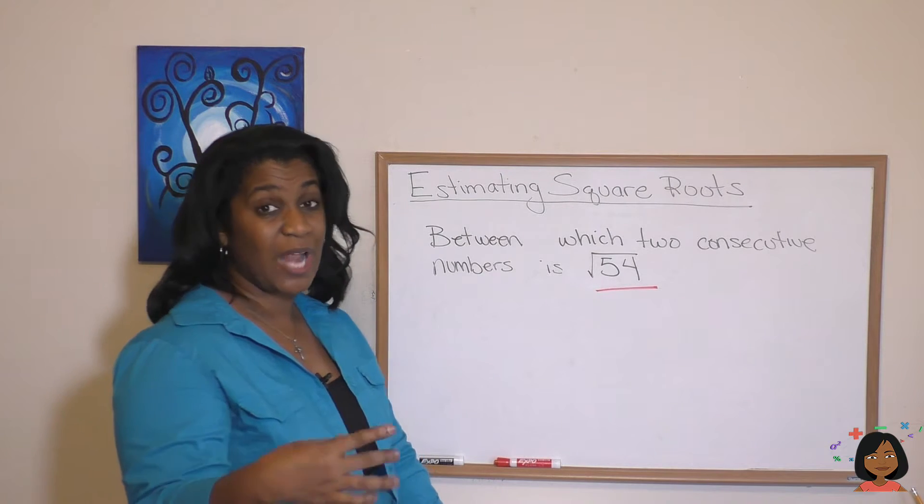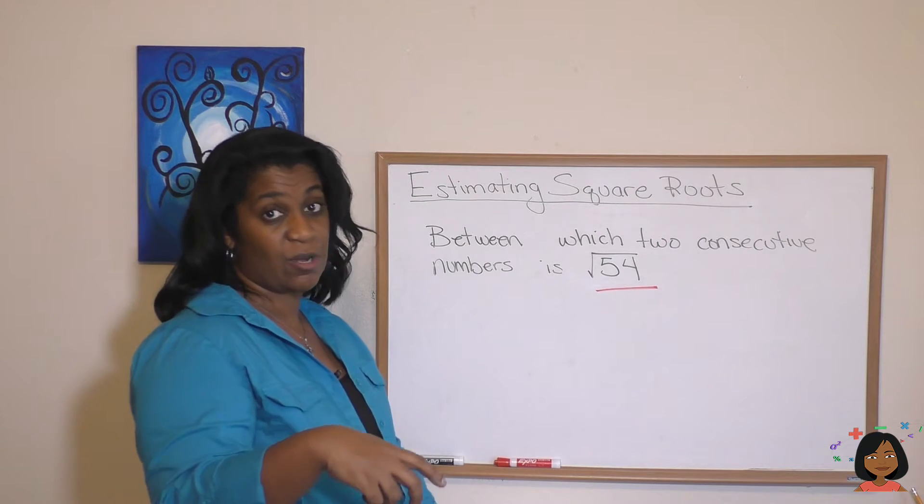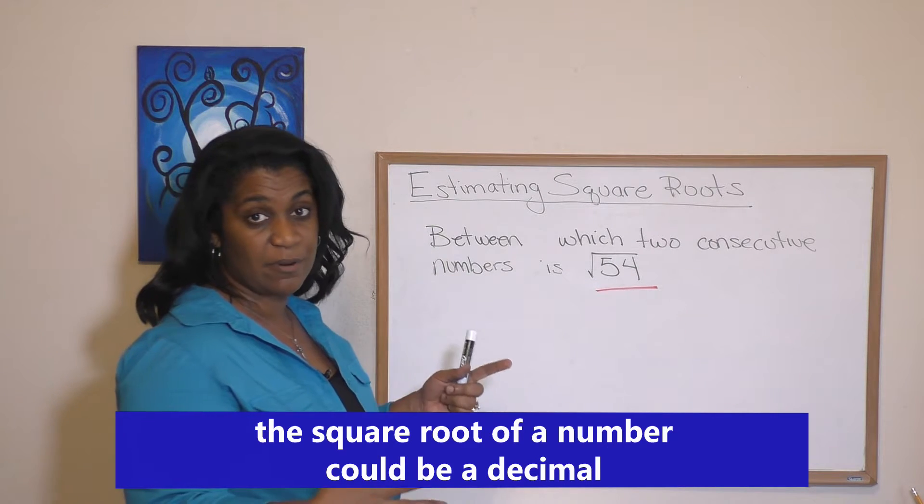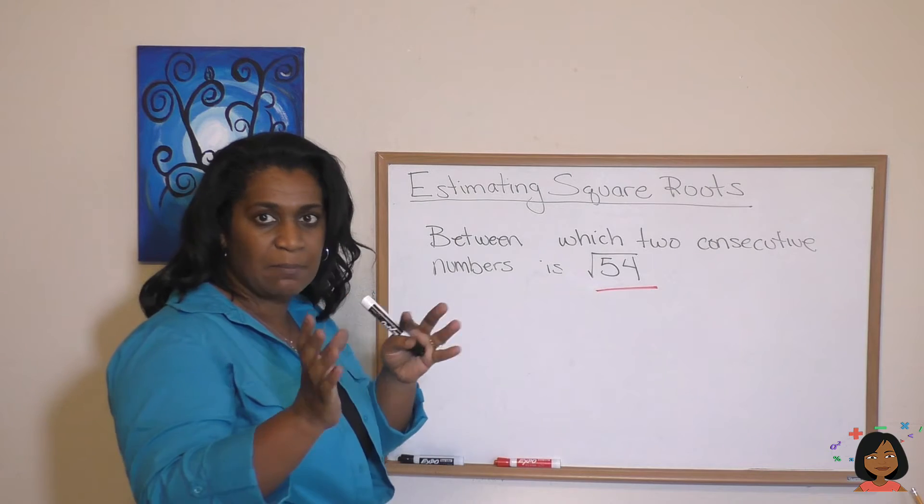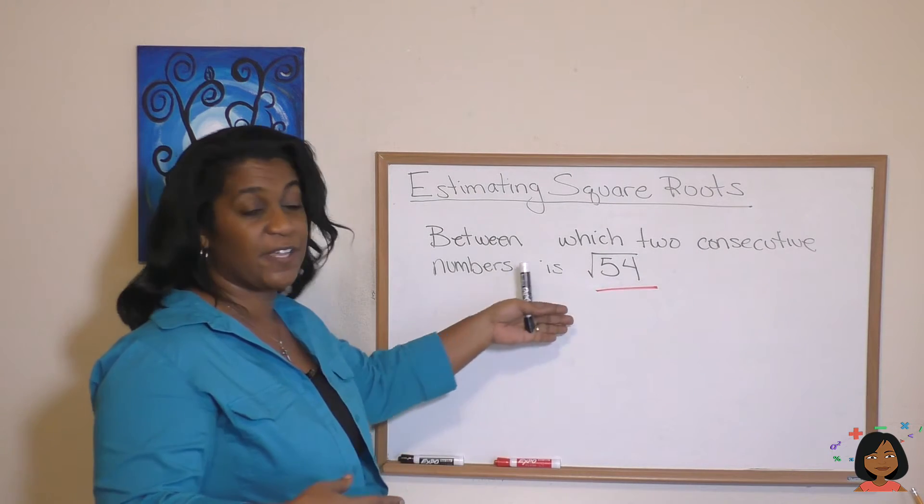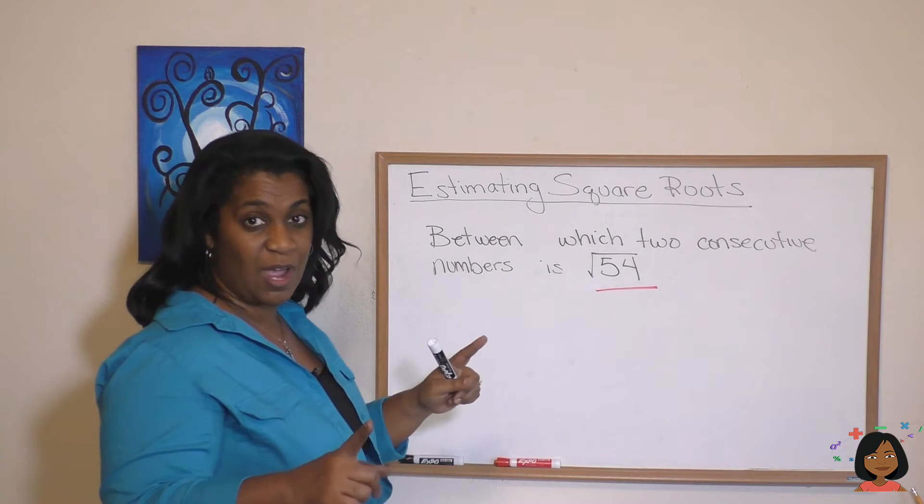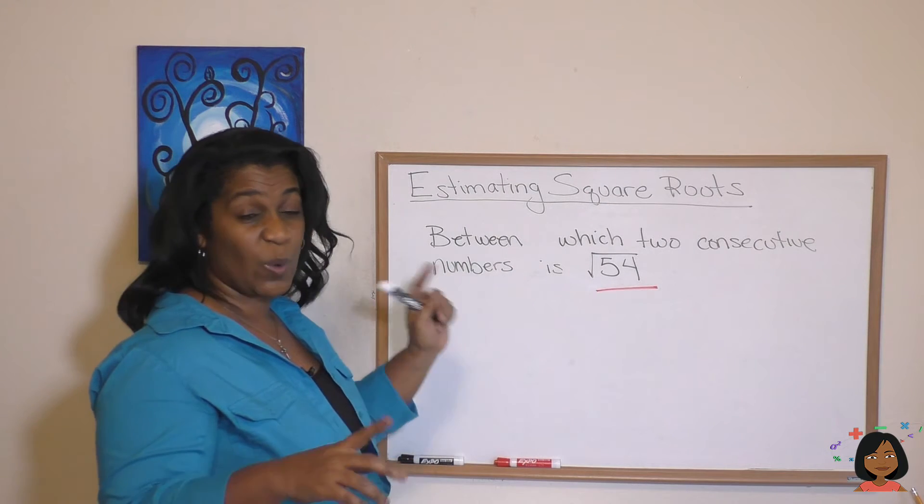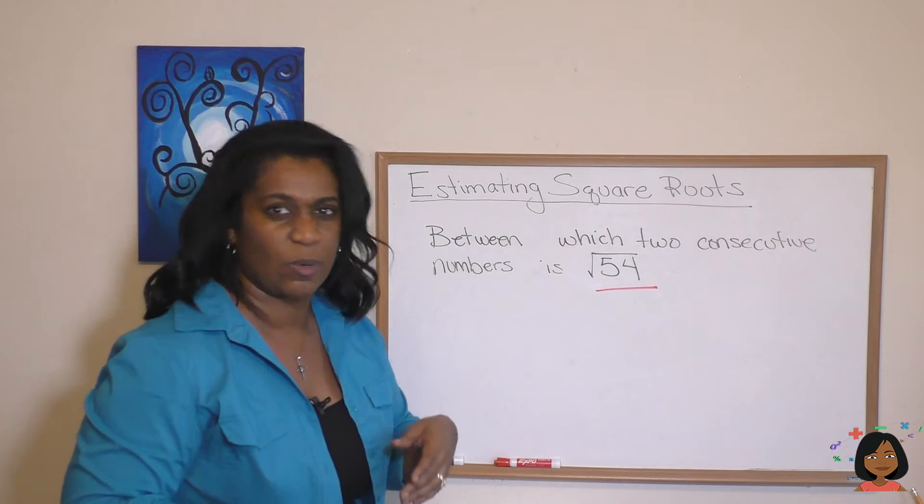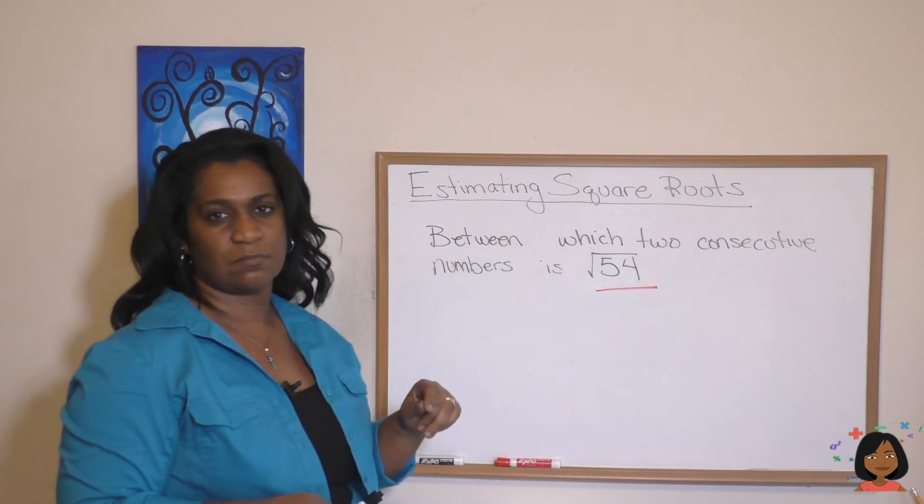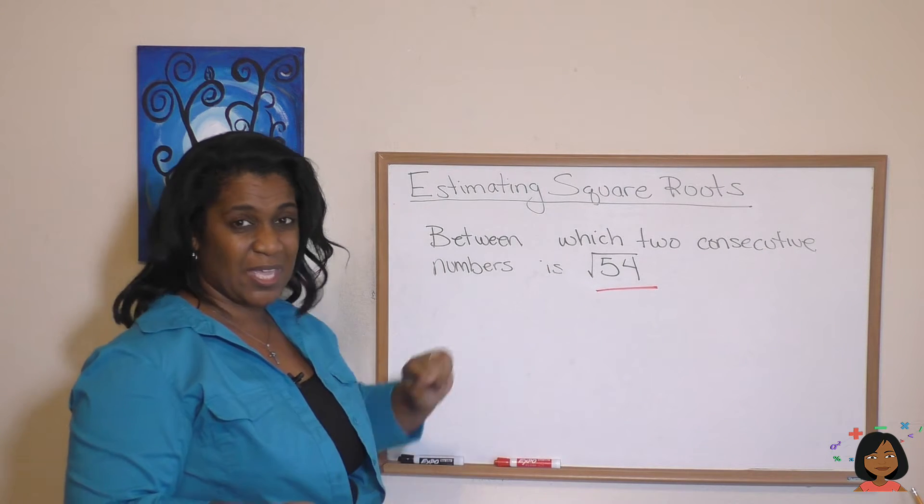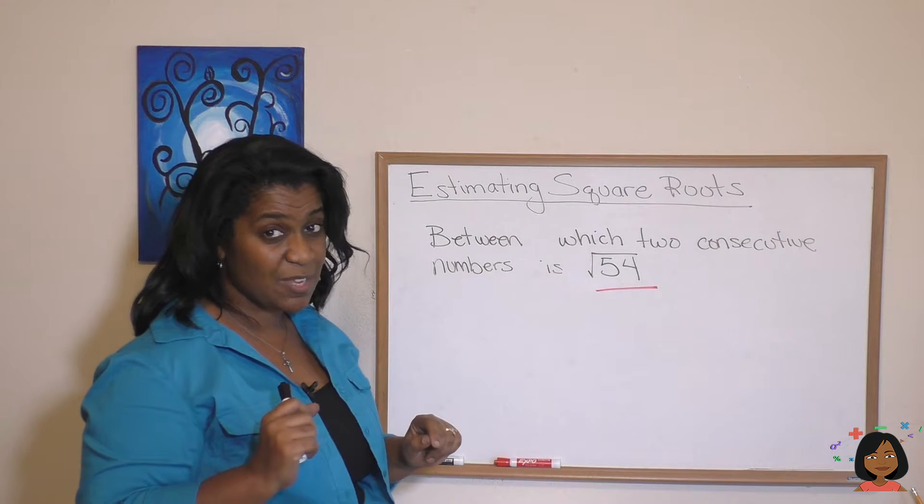Sometimes we're looking for a square root and we're not going to get a whole number answer. The answer might be a decimal or it might be between two numbers. And our job is just to figure out where it might lie, what two numbers it might lie between. So let's see if we can figure out or get close to the two numbers that the square root of 54 lies between. We know 5 times 5 is 25, so that's not it. 6 times 6 is 36. I think we can get closer. 7 times 7 is 49. That's not too bad.